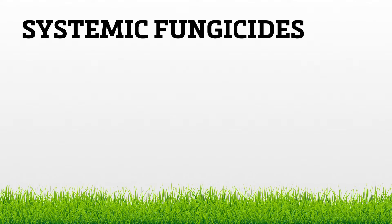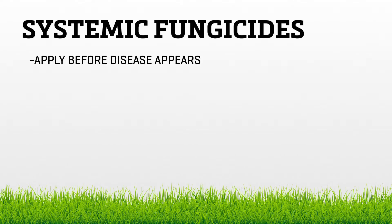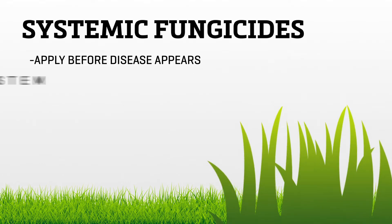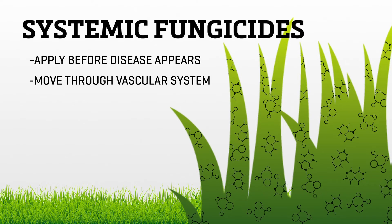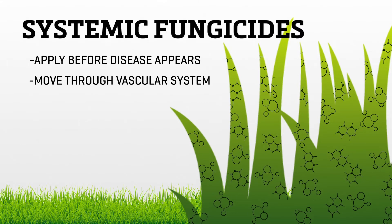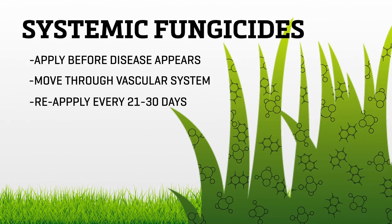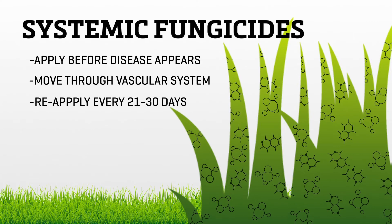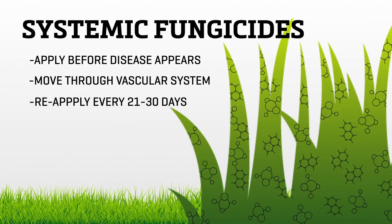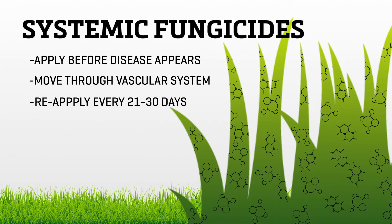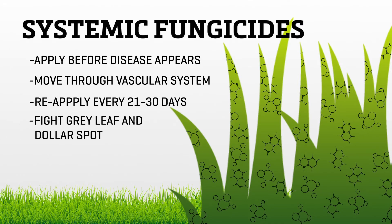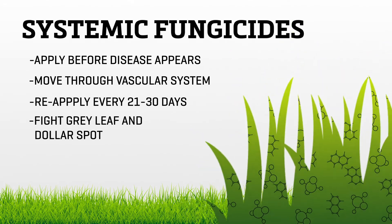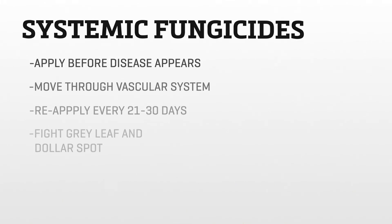Systemic fungicides are very powerful when used for prevention and curative programs. You need to apply the solution before you spy signs of the diseases. Once applied, these products move through the plant's vascular system to control and inhibit fungi. Reapplication is typically required every 21 to 30 days for central Florida. Systemic fungicides are useful in treating and preventing gray leaf spot and dollar spot.